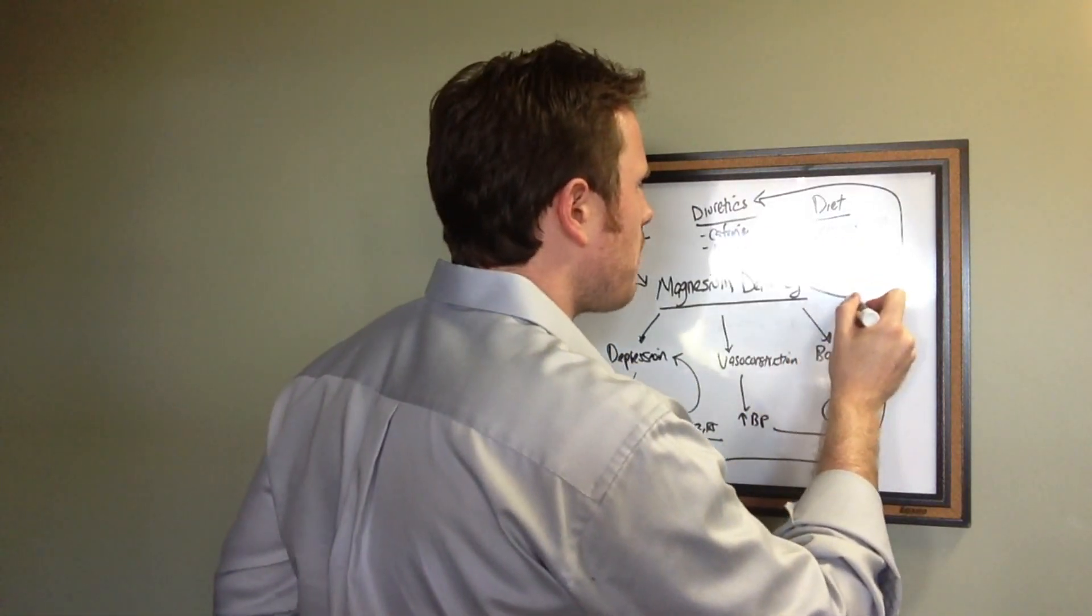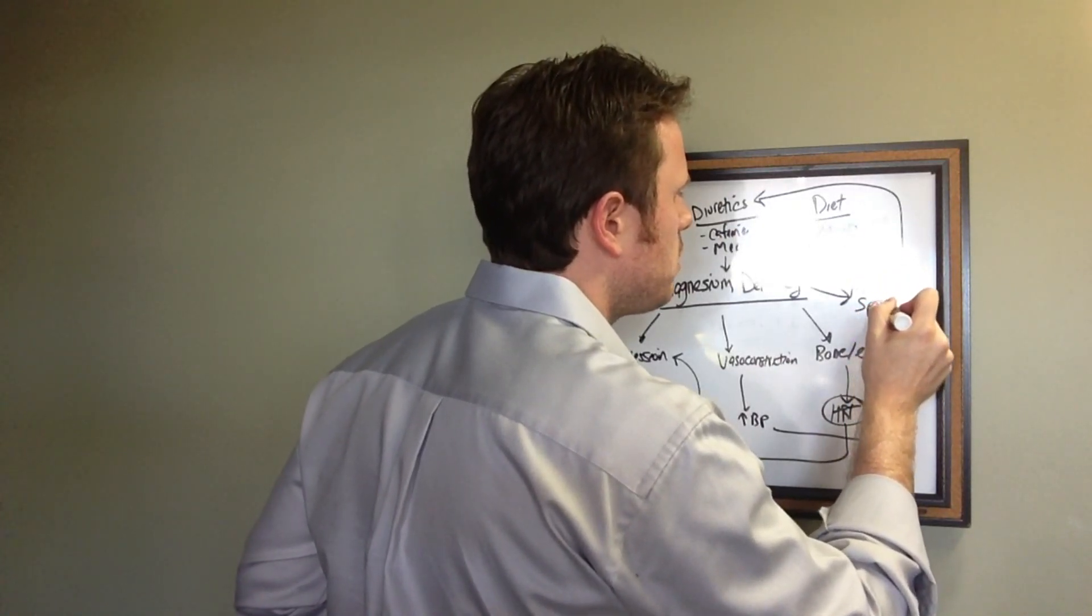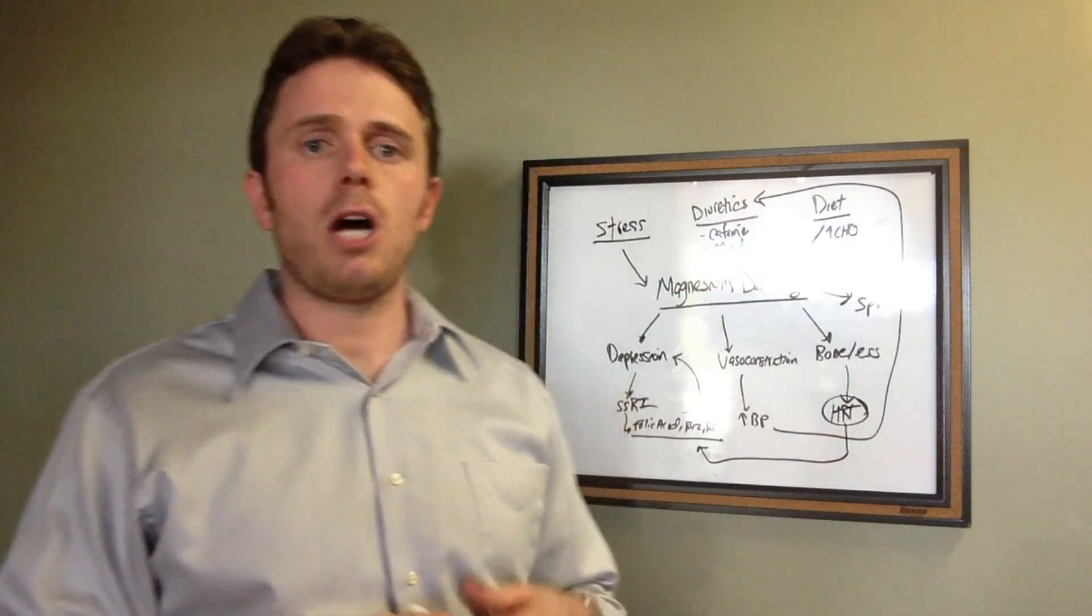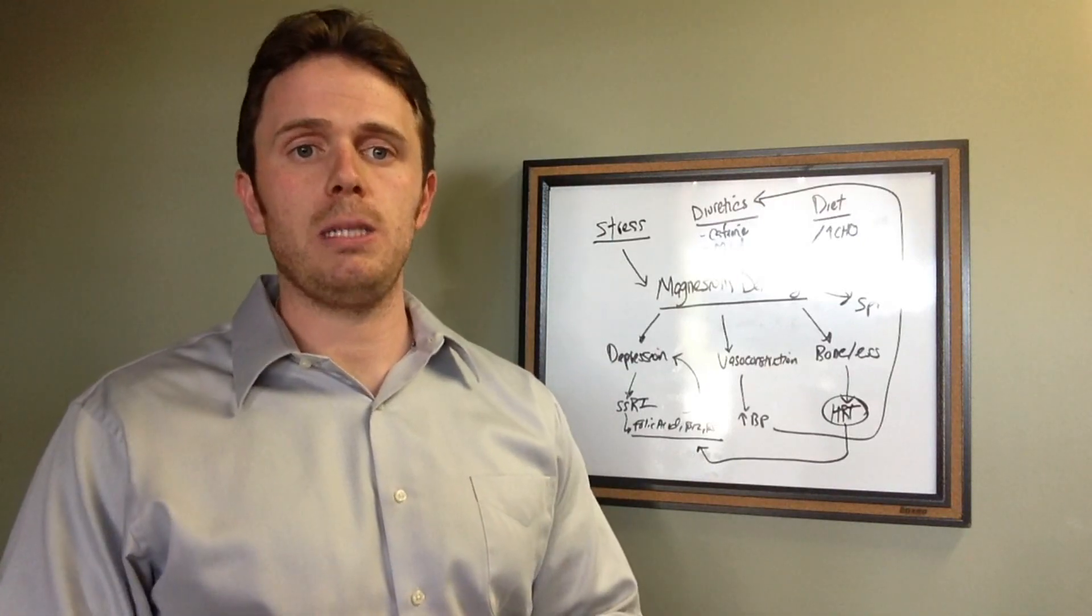Next would be muscle spasm. Typically when we see a magnesium deficiency, the muscles will spasm or your eyelid may twitch a little bit. That is a common sign of magnesium issues. We will also see sore muscles with magnesium deficiency.